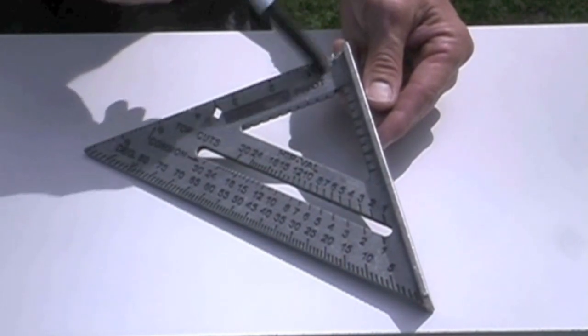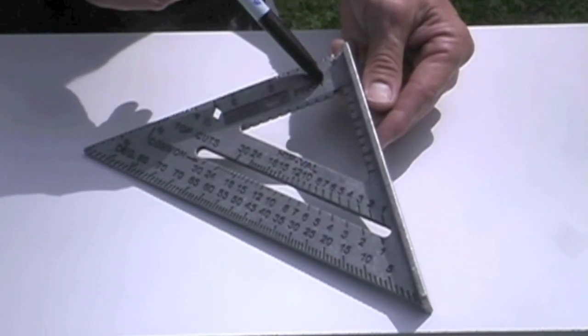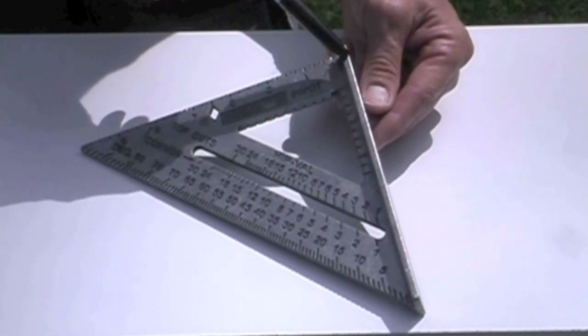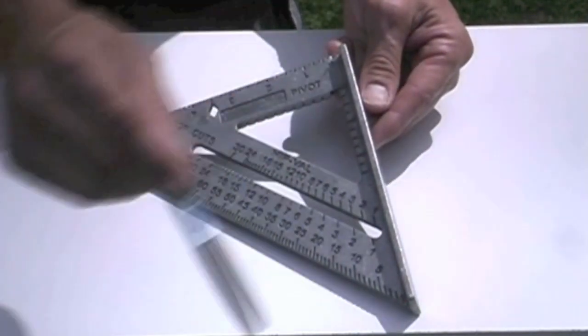I'm going to show you how it works. First thing we want to do is look at this right here. This is your pivot point, and it even says pivot and has an arrow. That means that this is the side that pivots all the time. You never pivot the other side.